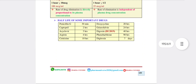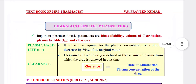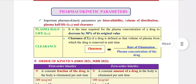Pharmacokinetic parameters. The main pharmacokinetic parameters are: volume of distribution, bioavailability, half-life, and clearance.